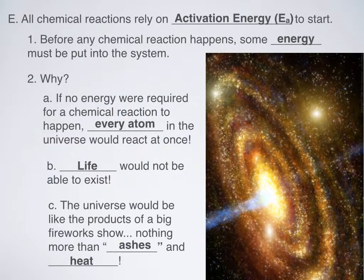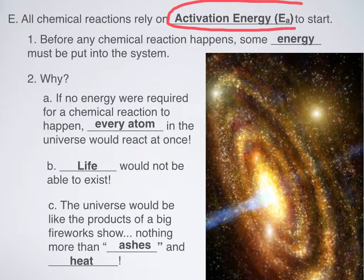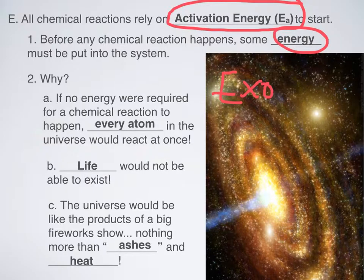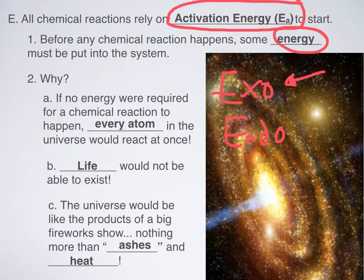So how do exothermic and endothermic processes happen? All chemical reactions, whether exothermic or endothermic, rely on activation energy. We represent activation energy as E sub A — E with a little subscript A. Before any chemical reaction happens, you have to put some energy into the system. Even though exothermic reactions release heat, in order for the reaction to work you have to put a little bit of energy into it. In endothermic reactions it's obvious because they absorb energy, but in an exothermic reaction most people think they just sort of happen on their own.